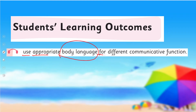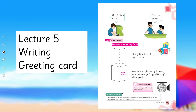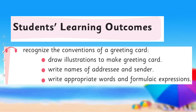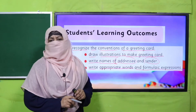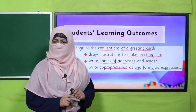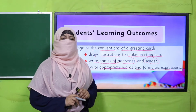Lecture 4, under the title of listening and speaking, we'll learn about different communicative functions and cover the SLO to use appropriate body language. Lecture 5, under the title of writing, we'll learn to make a greeting card and cover the SLOs to recognize the conventions of a greeting card, draw illustrations, write the name of addressee and sender, and write appropriate words and formulaic expressions. This is the SLO-based lecture plan for this unit.